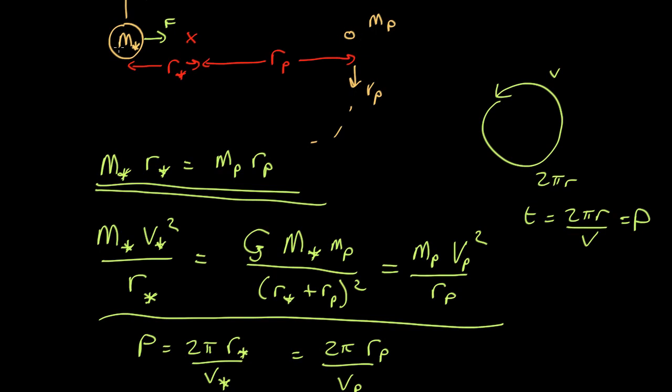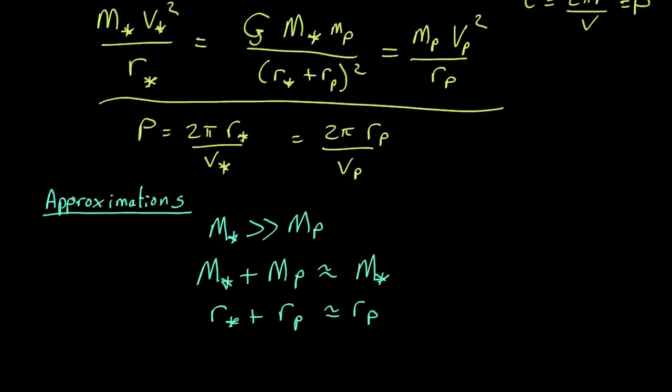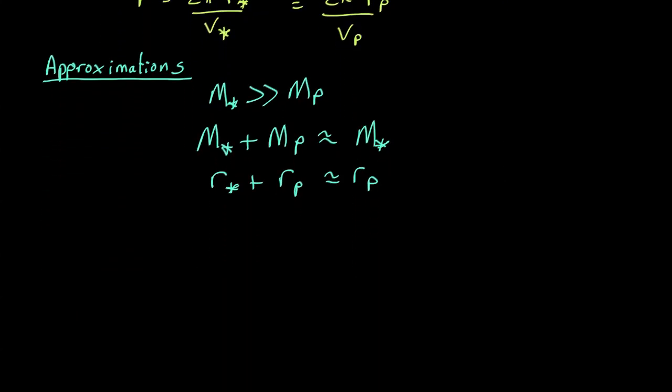That's because the planet is much less massive than the star, r p has to be much more than r star, so we can approximate the sum of these two as just r p. Not quite right, but typically a planet is a thousand times less massive than the star. It's only going to be off by one part in a thousand or 0.1%. So these are pretty useful approximations and will get us a nice answer.